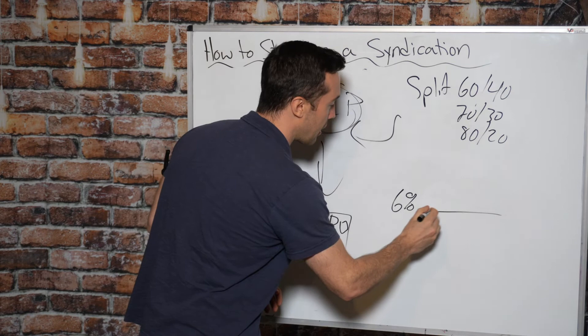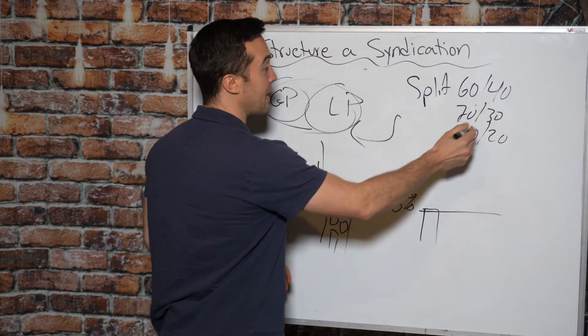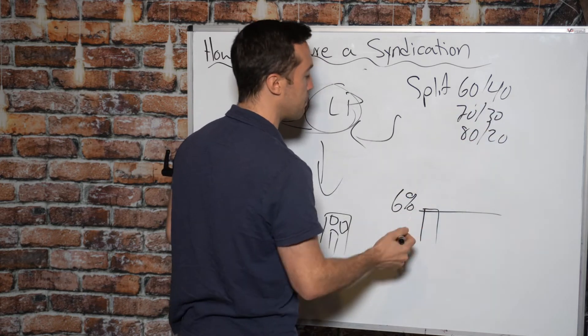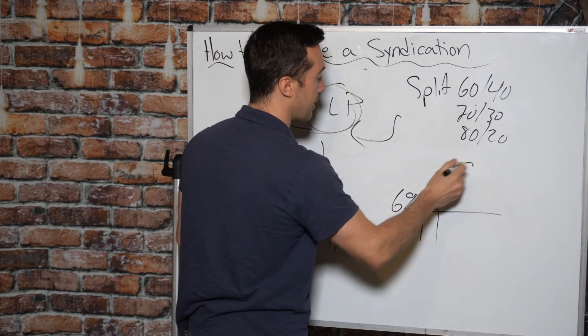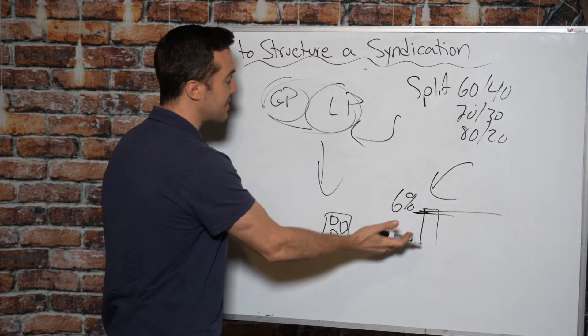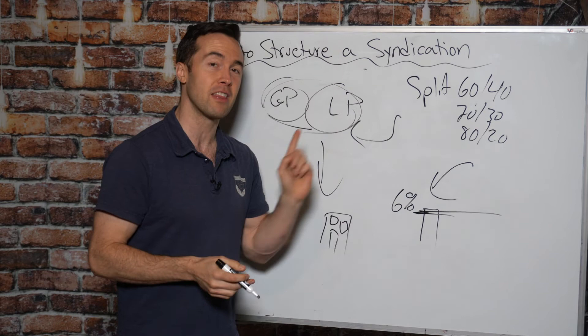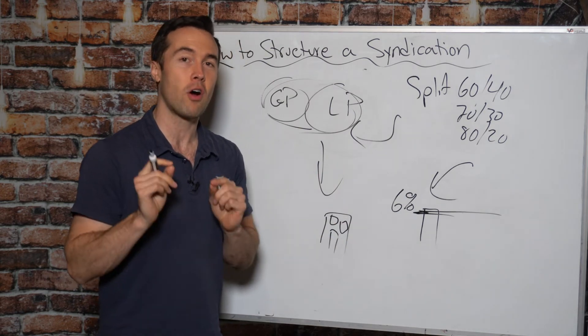But with preferred equity, with the preferred return, the deal must hit that target of six percent before the general partnership can participate in their, let's say it's a 70-30 split, then their split kicks into effect once that six percent is reached. If the deal doesn't hit six percent, well, guess what? The general partnership is not participating in the profits, even though fees are paid.